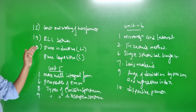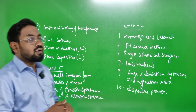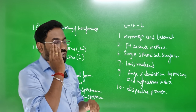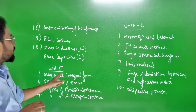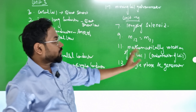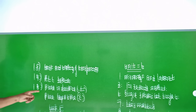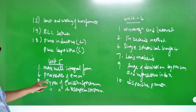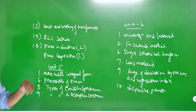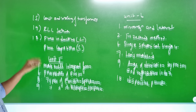Working of transformer, RLC circuit, pure inductance, and capacitance. Consider everything including transformer, RLC, and orientation of coil for Units 3 and 4.